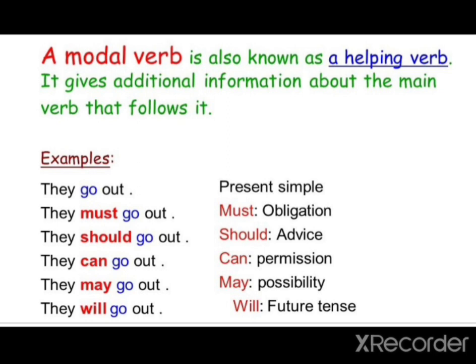For example, consider the sentence: 'They go out.' With modal verbs, we can make different variations: 'They must go out' — obligation. 'They should go out' — advice. 'They can go out' — permission. 'They may go out' — possibility. 'They will go out' — future. So in these different ways, we can use the modal verb.